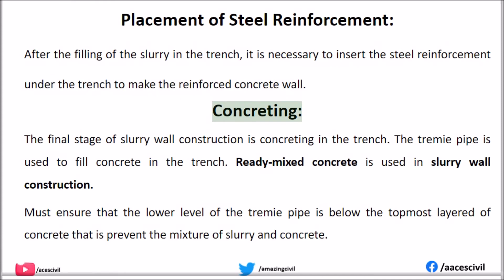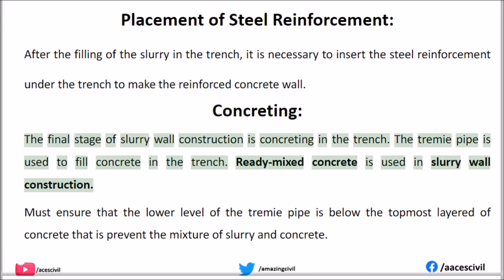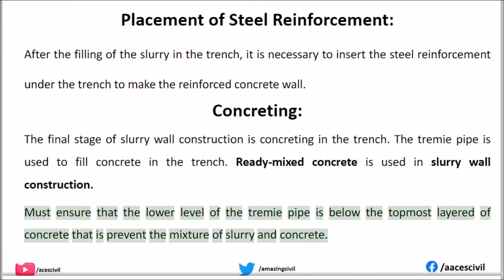Concreting: The final stage of slurry wall construction is concreting in the trench. A tremie pipe is used to fill concrete into the trench. Ready-mixed concrete is used in slurry wall construction. It must be ensured that the lower level of the tremie pipe is below the topmost layer of concrete to prevent the mixing of slurry and concrete.